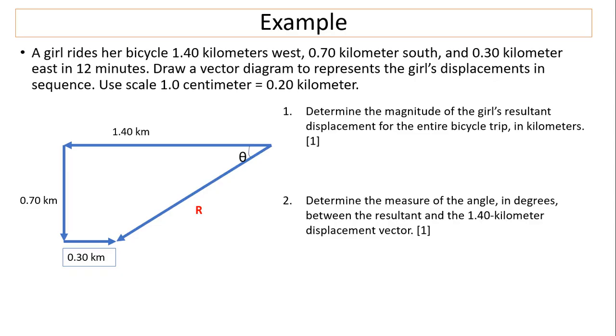Another example. A girl rides her bicycle 1.4 kilometers west, 0.7 kilometers south, and 0.3 kilometers east in 12 minutes. Draw a vector diagram to represent the girl's displacement in sequence, using scale 1 centimeter equals 0.2 kilometers. We did this question before, so I drew it out already here for you.